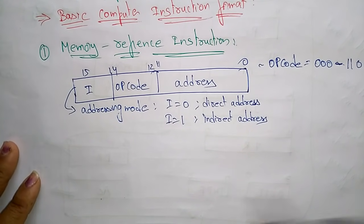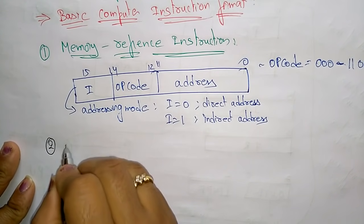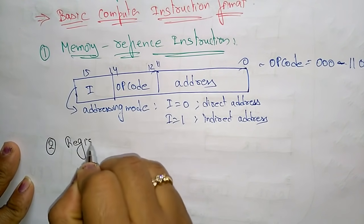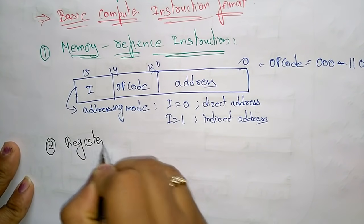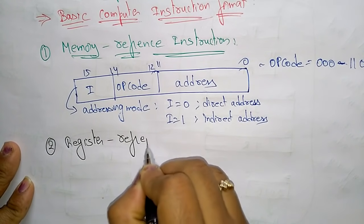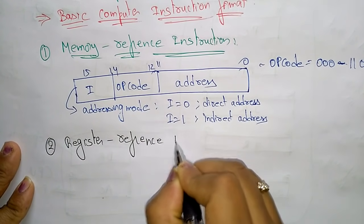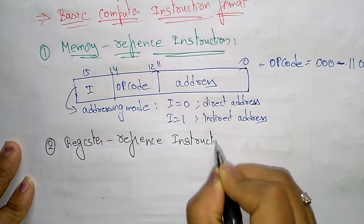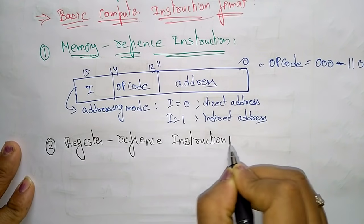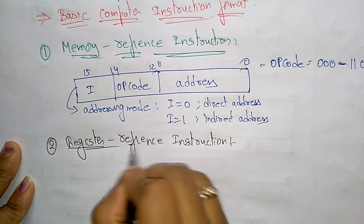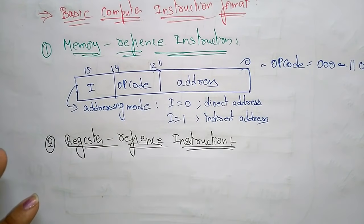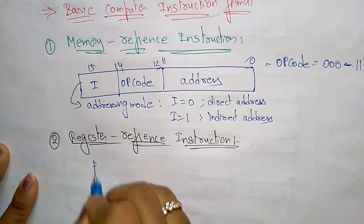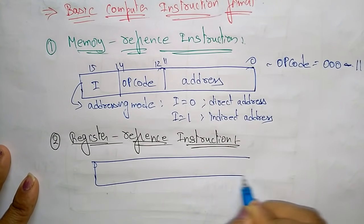The second instruction type is the register reference instruction. Let us see the format of the register reference instruction — this is also 16 bits.